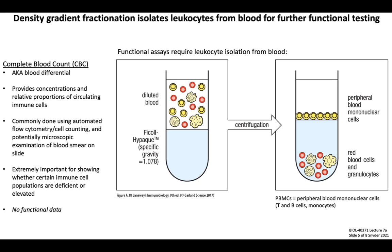When a more serious or complicated diagnosis is suspected based on CBC data, clinical labs can run functional tests on circulating immune cells, all of which require their isolation from blood using density gradient fractionation. Blood is diluted in a saline solution containing an anticoagulant reagent like EDTA or heparin, then pipetted on top of a tube containing a solution called FICOL — a carbohydrate polymer that provides a step gradient separating cells based on their densities. Once the sample is spun in a centrifuge, granulocytes such as neutrophils, basophils, and eosinophils — which have larger, denser nuclei — collect at the bottom along with red blood cells. Peripheral blood mononuclear cells, or PBMCs, including T and B lymphocytes and monocytes, are less dense and collect near the top of the gradient.